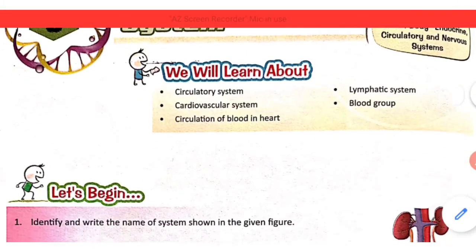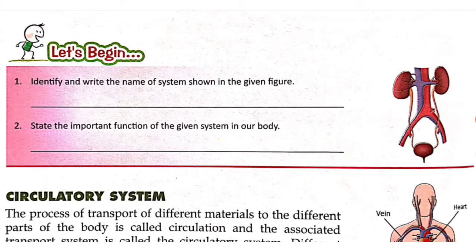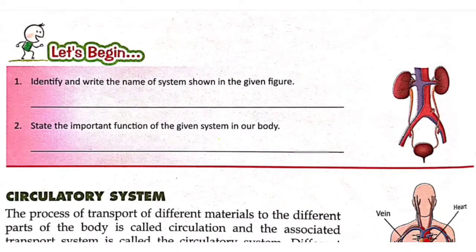Here is a question for you. There is a figure and you have to identify which type of system it shows. You can see that two kidneys are present, and also the ureter and urethra are shown. So what system is this? This is the excretory system.